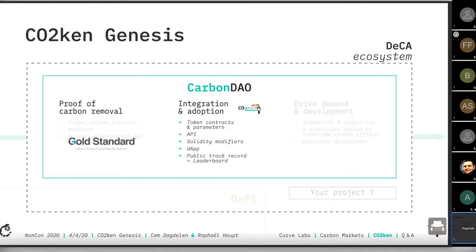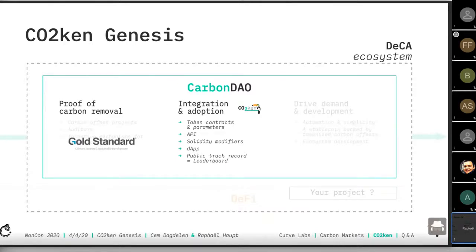This is the current state of the project. We decided to focus on the middle part first — we have to prove that tokenized carbon offsets have a market and that they have an advantage over existing systems. So we've created a CO2 token contract, an API which allows everybody to interact with the CO2 contract — any Web3 application. We've created Solidity modifiers which can be integrated into existing smart contracts, so that every time they're called they automatically offset their carbon emissions. We've created a simple front end app allowing everybody to directly offset their carbon emissions and a public track record of offsetting activity.